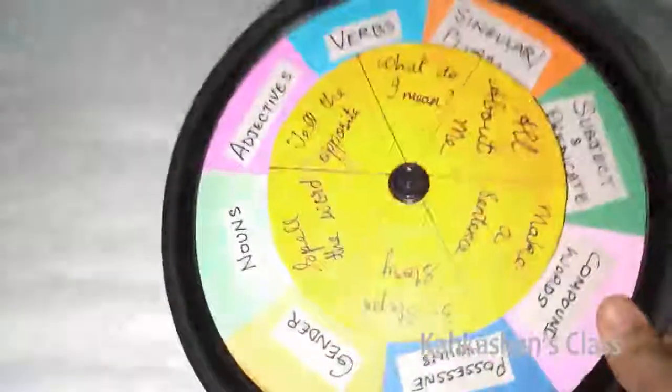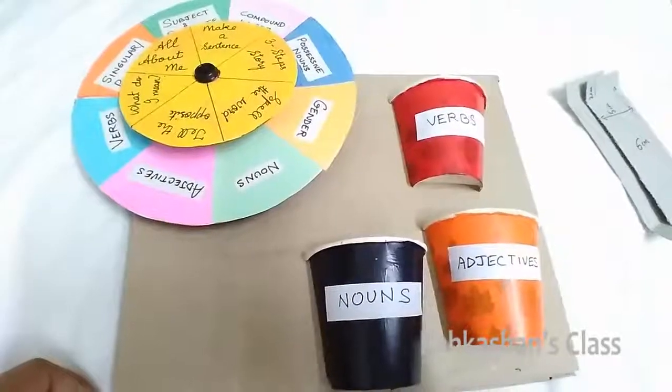Take the rubber gasket and put it on the big spinning wheel like a frame. Stick it on. Your spinning wheel is ready.